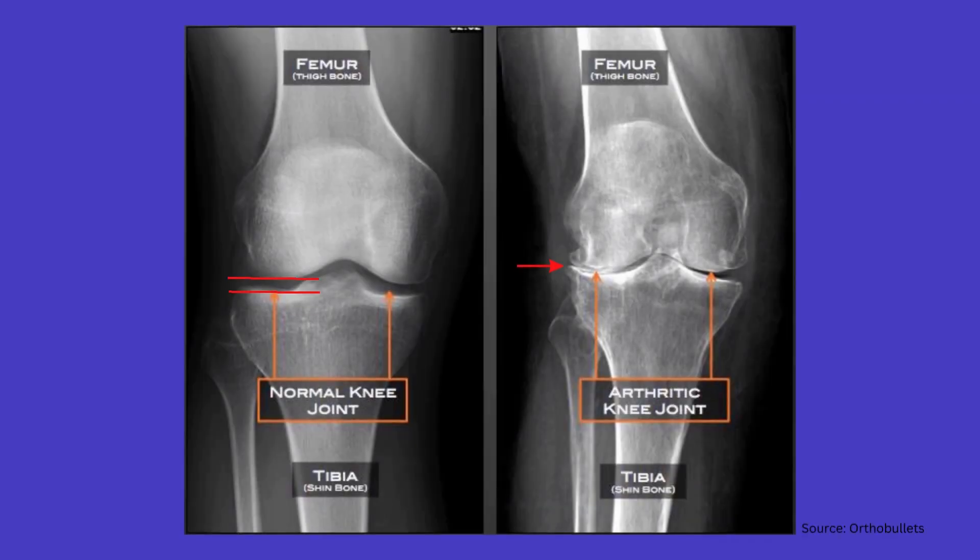Looking at this image as an example, you can see here compared to the normal joint how the joint space is narrowed. This is typically due to loss of articular cartilage, thus lessening the cushion between the bones of the joint.